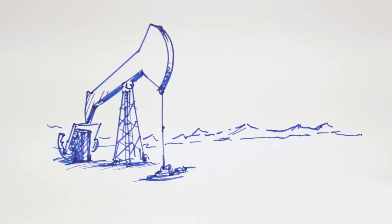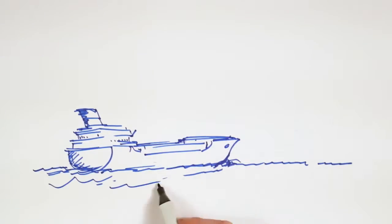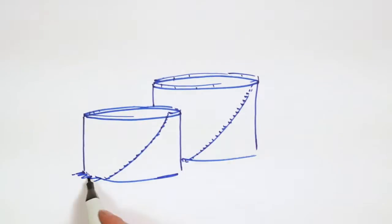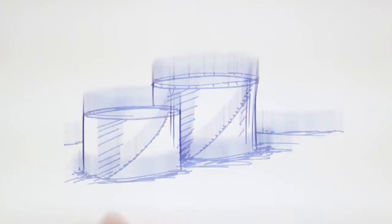After the oil has been pumped out of the ground, it is taken to our refinery and many others around the world in large tankers and unloaded into storage tanks. What happens next?